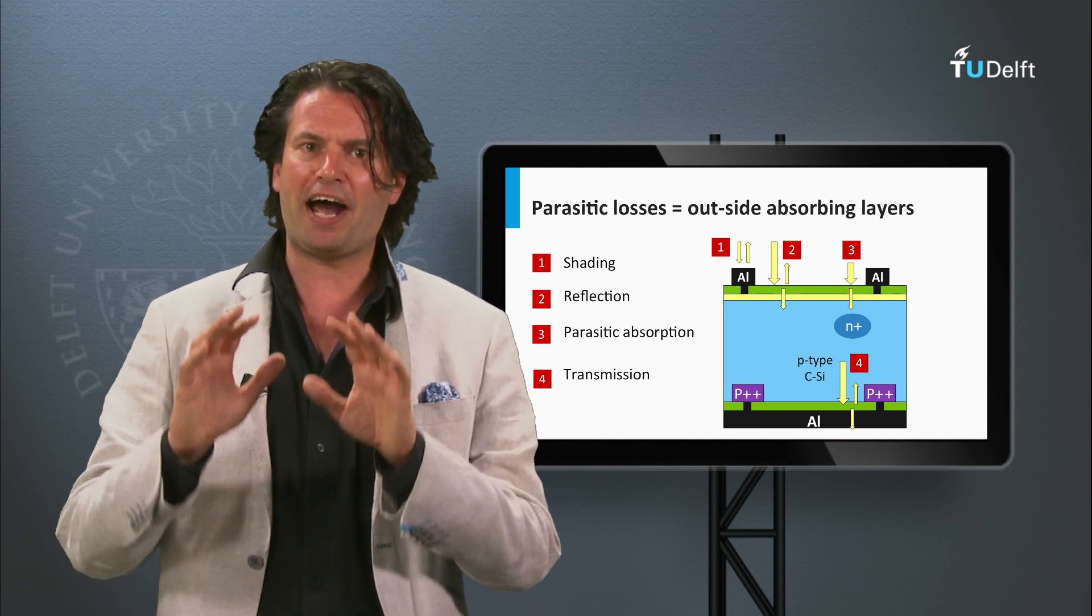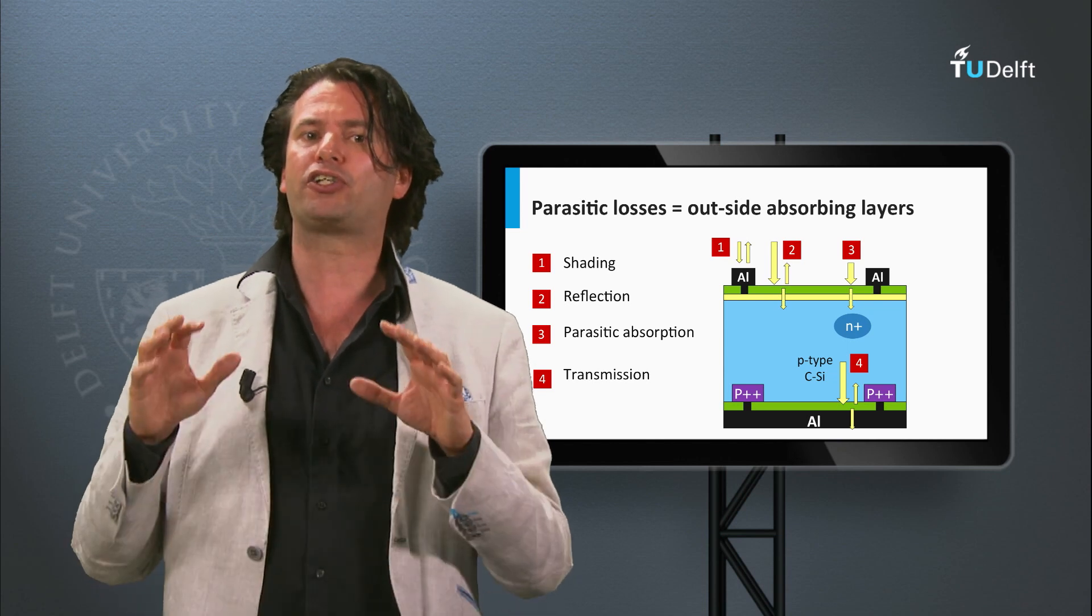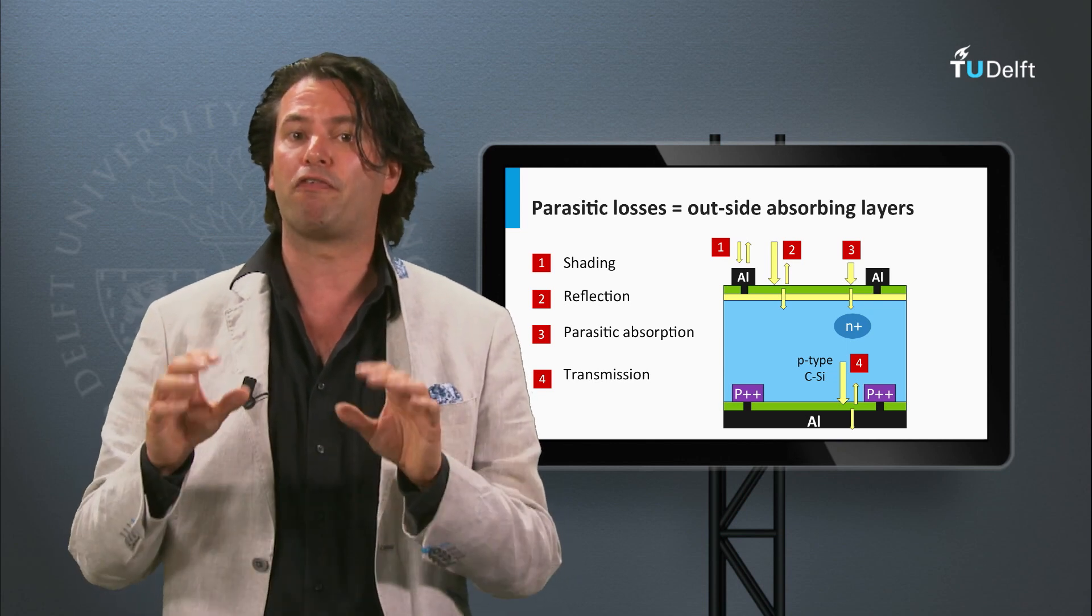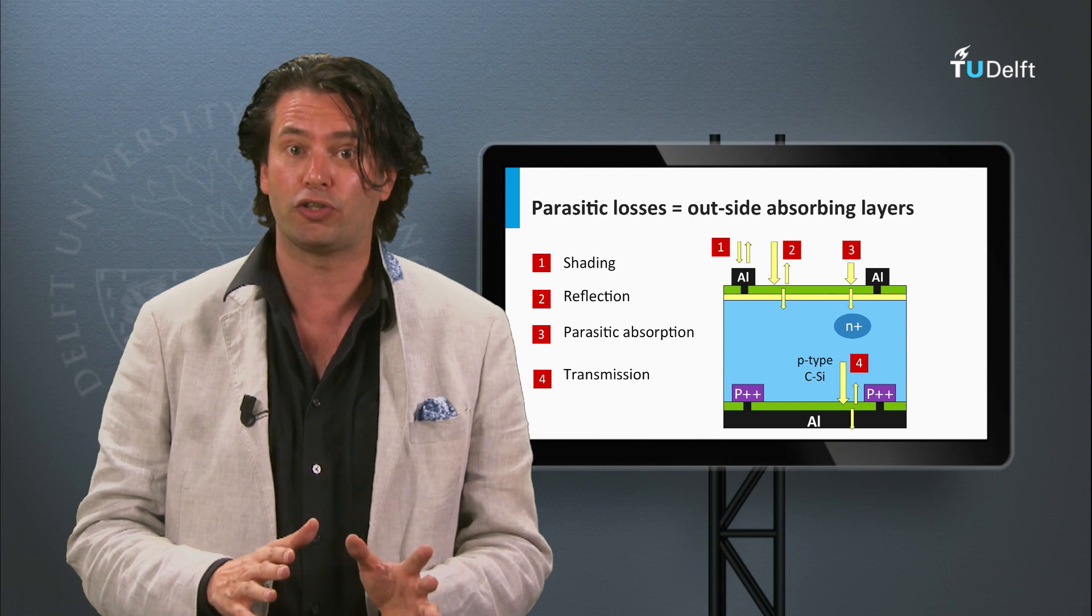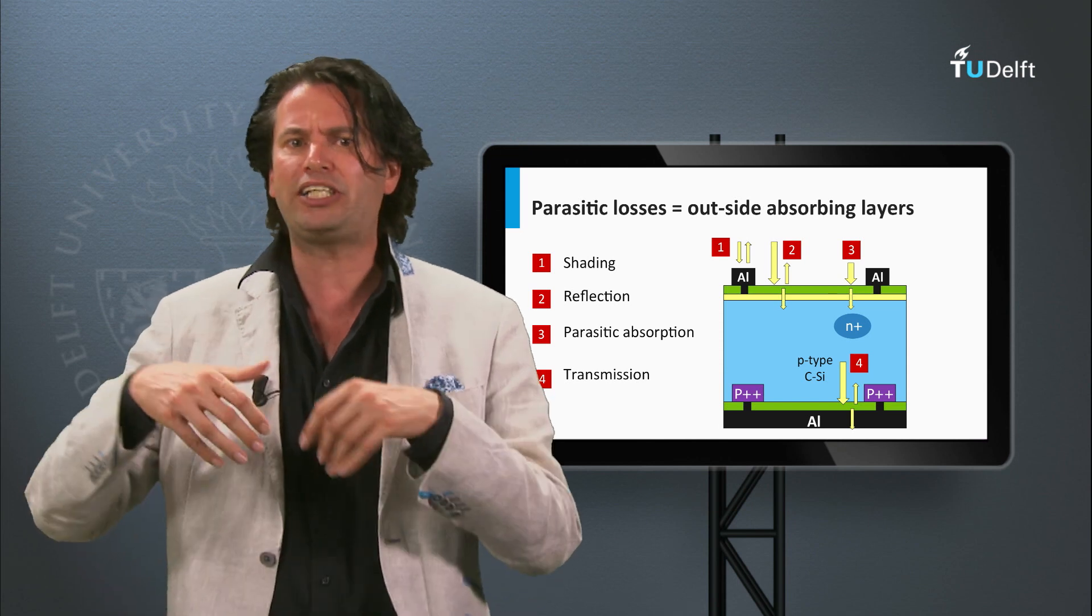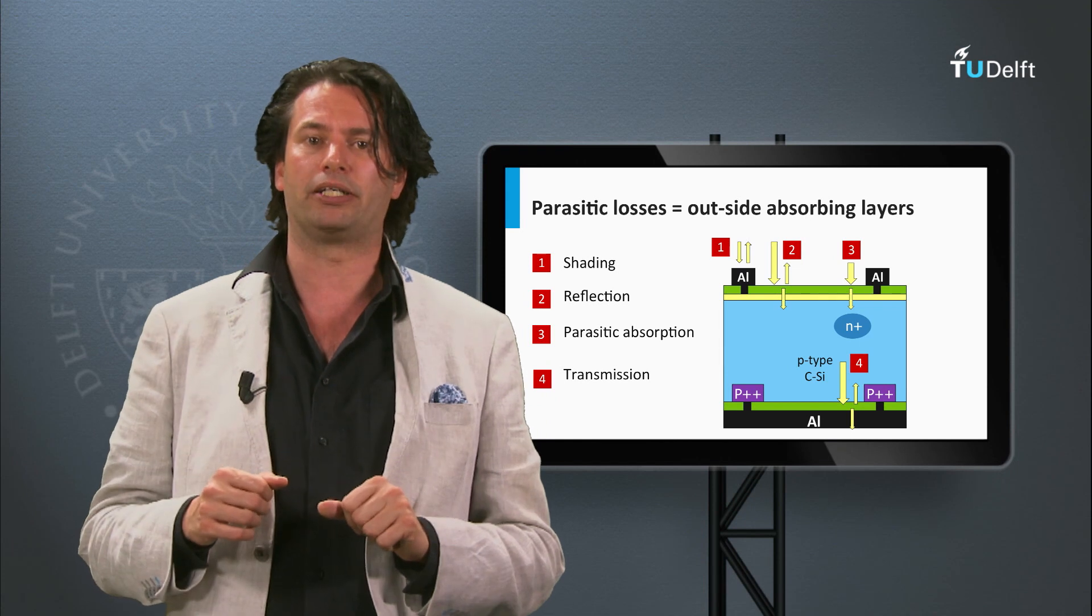In the next final block of this week, I will discuss methods to reduce the reflection at the front surface of a solar cell and I will discuss under which condition light might be trapped in the absorber layer.